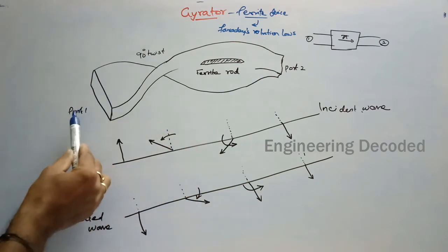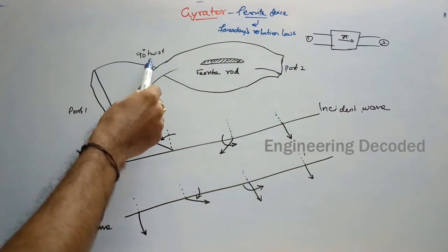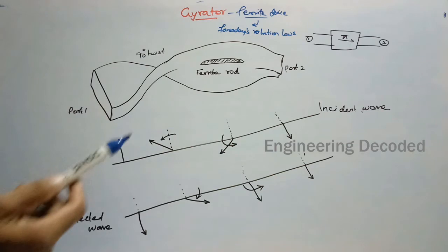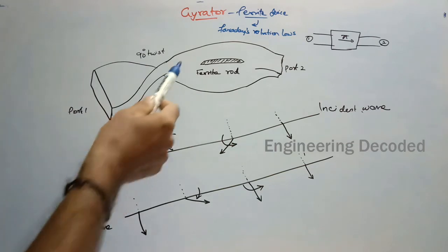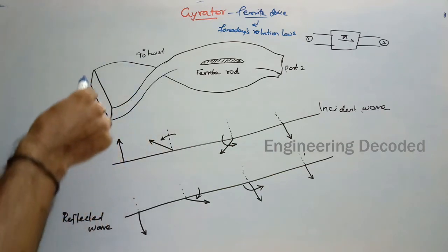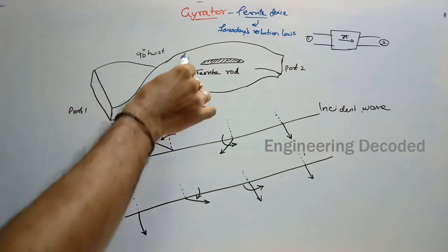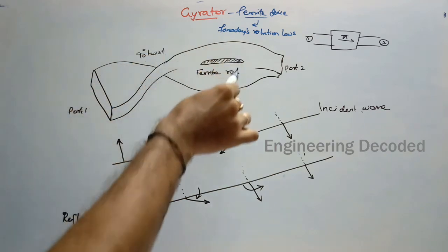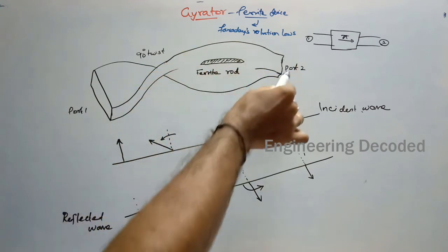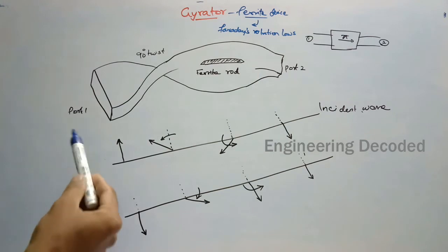This is the structure of a Gyrator. We have two ports — port 1 and port 2. Here we have a 90 degree twist and here we have a ferrite rod. This portion is a rectangular waveguide, here we have a 90 degree twist and a circular waveguide, and this circular waveguide is again connected to a rectangular waveguide.